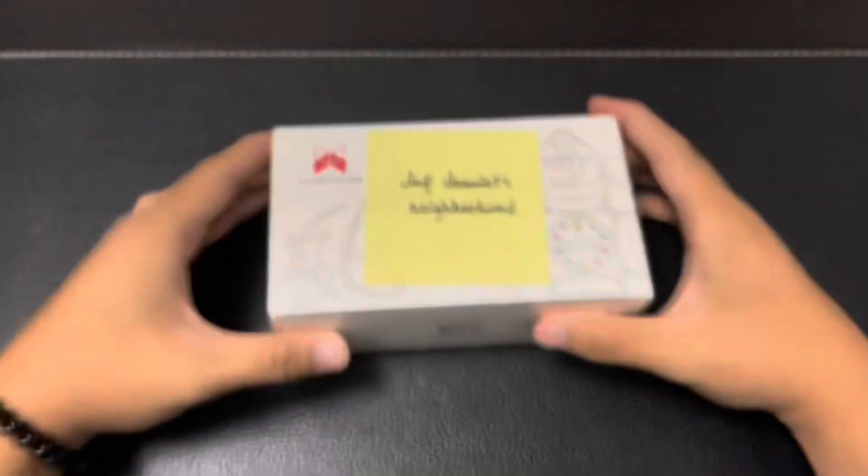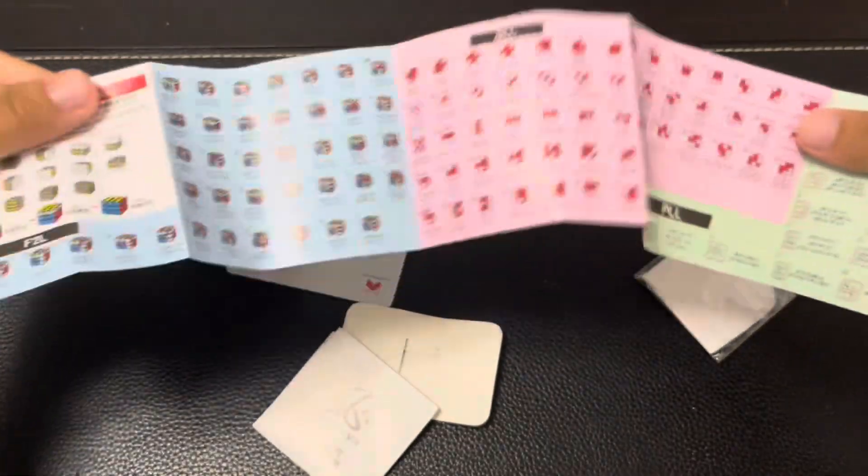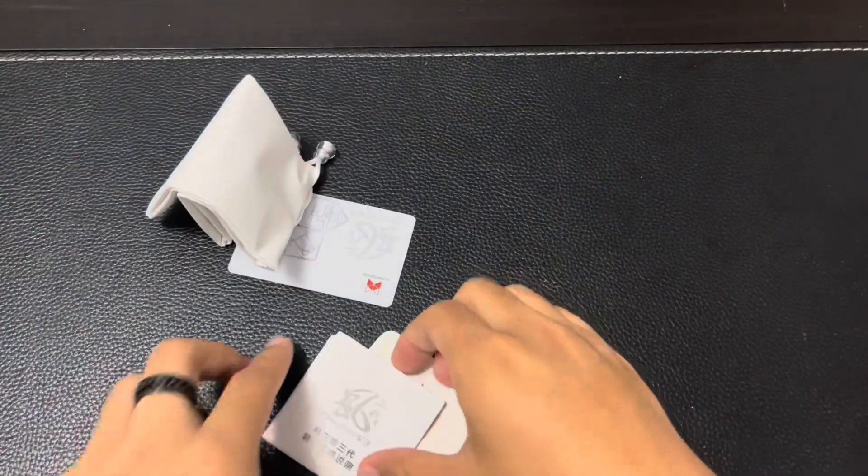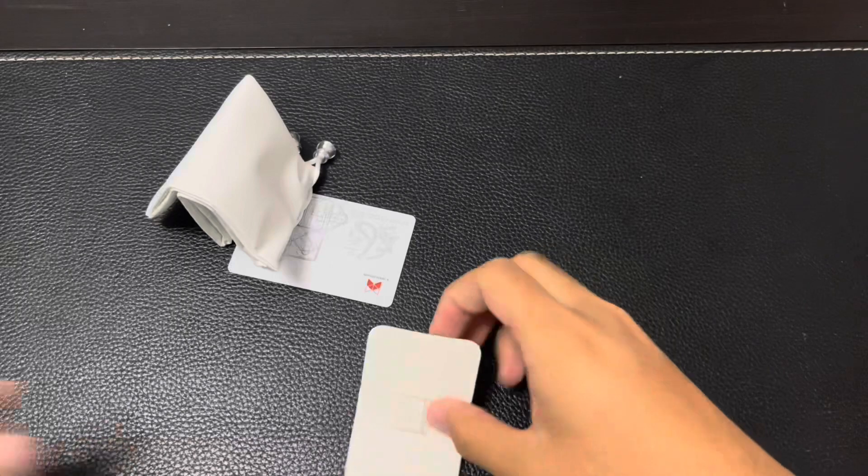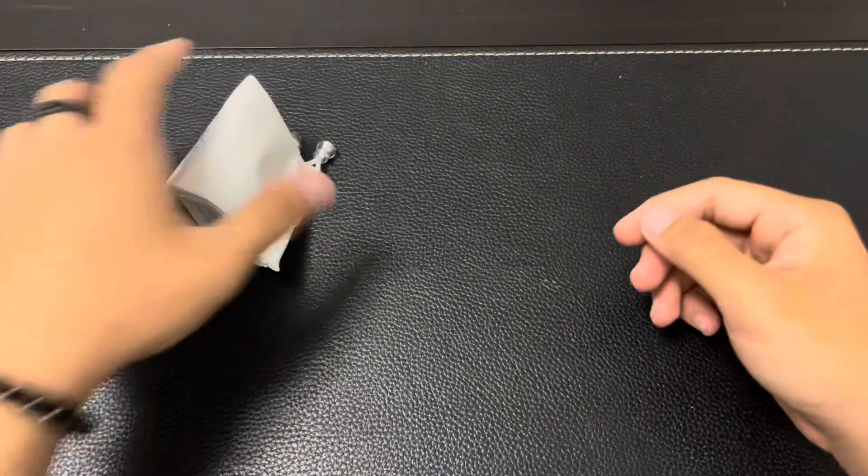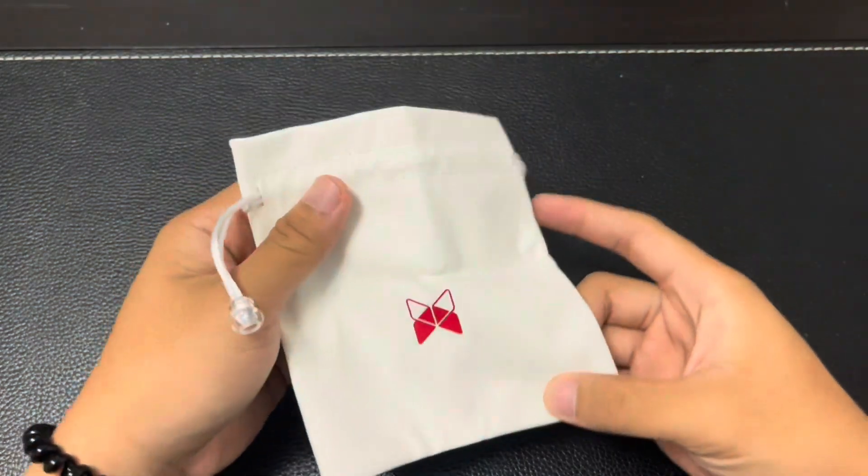Alright, let's crack this open. So it comes with instructions, a wiping mechanism, a piece of paper, a tool, a card, and a nice bag.